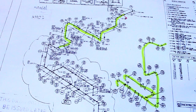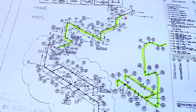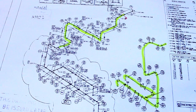Hi guys, welcome back to Piping Welding and DT channel. This is an example of an as-built drawing. I will show you how to as-built an isometric drawing. We have an isometric here with different orientations.